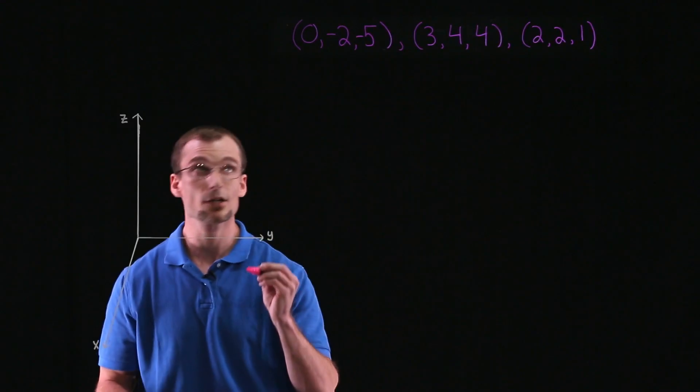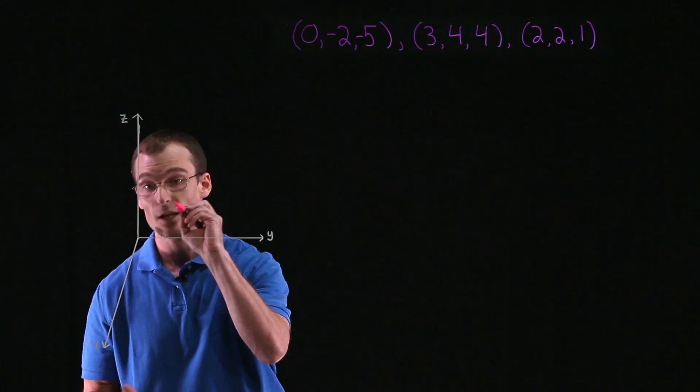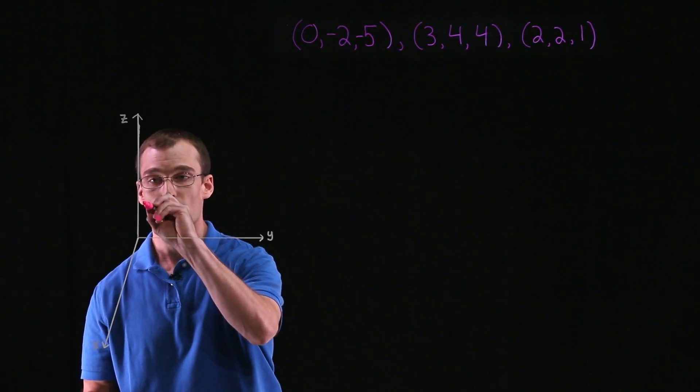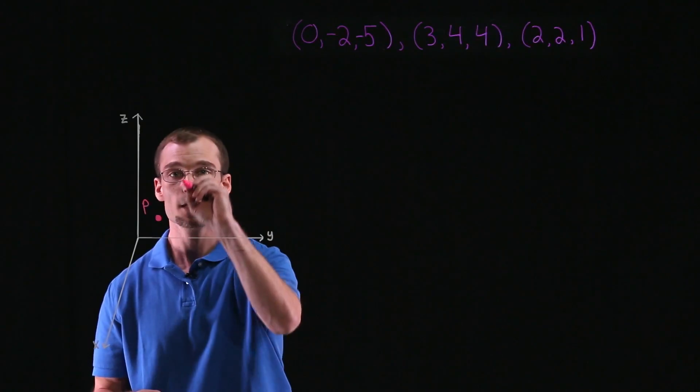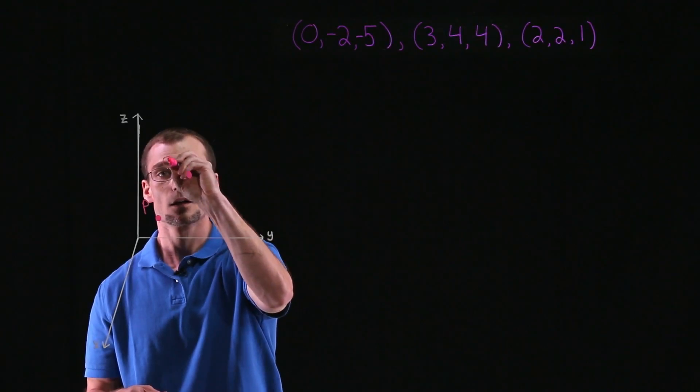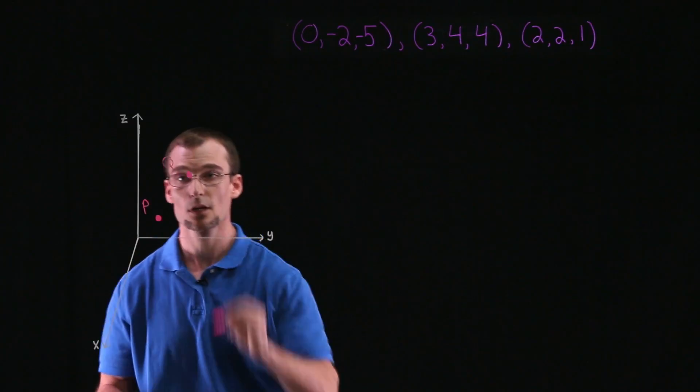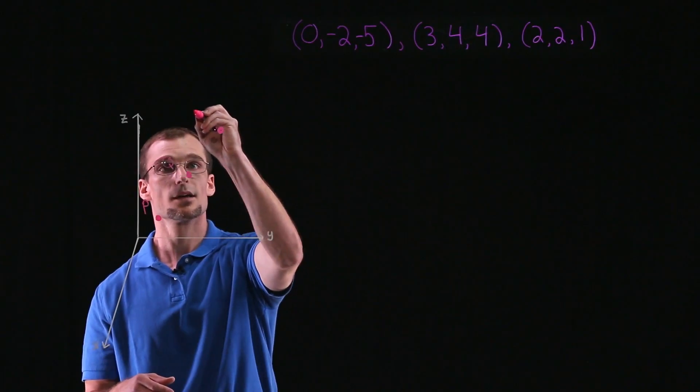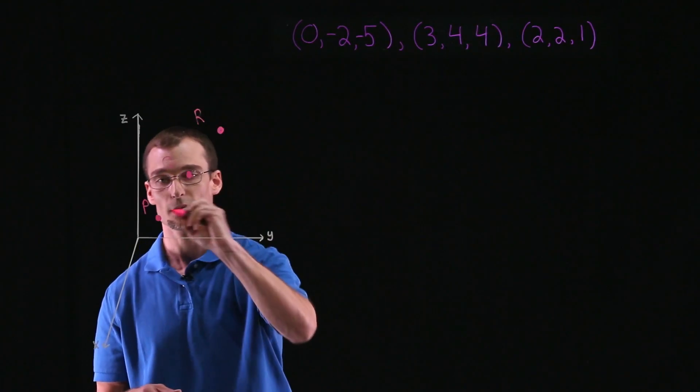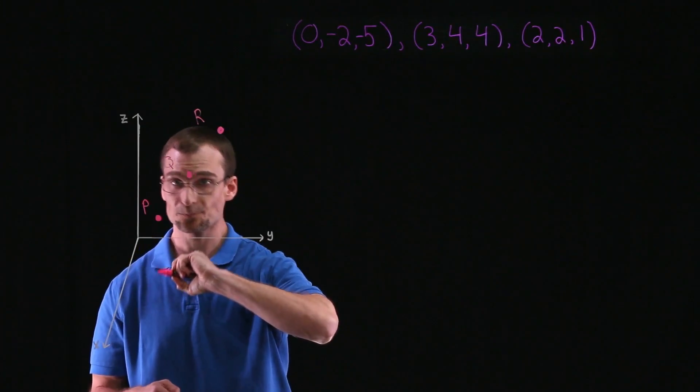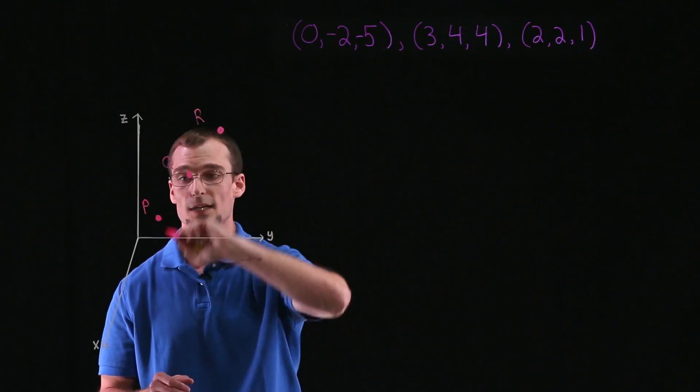So let's consider three points that are collinear. Call one point P, next point Q, and say another point, we'll call it R. So considering them to be collinear, they all lie in the same line.